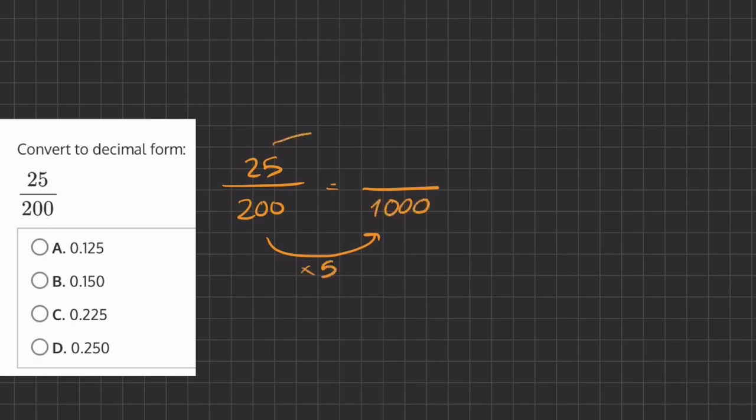Now if we multiply the denominator by 5, we'll also multiply the numerator by 5. And 25 multiplied by 5 is 125.